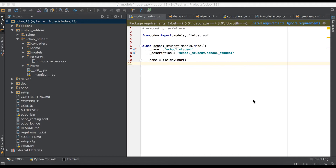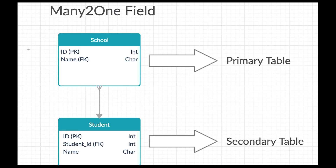First of all, we need to understand how the Many2one field works. We are checking one diagram, and based on that diagram we will create a Many2one field. This diagram shows two tables: one is School and one is Student, to give you a basic understanding of how the Many2one field works in Odoo.